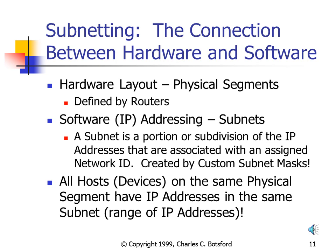We have our hardware layout — physical segments defined by routers — and we need to match that to our software addresses: our IP addressing and subnets. A subnet is a portion or subdivision of the IP addresses associated with an assigned network ID. We create these subnets with custom subnet masks, setting up subnetting so that all hosts on the same physical segment have IP addresses in the same subnet.